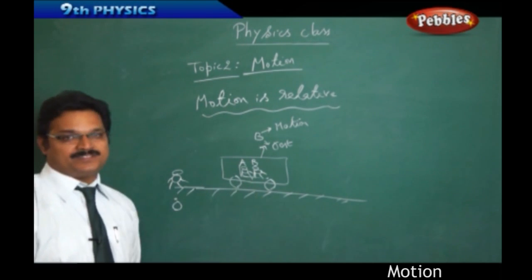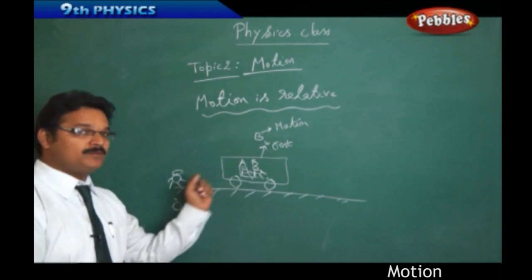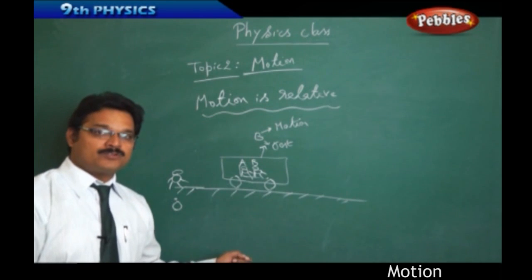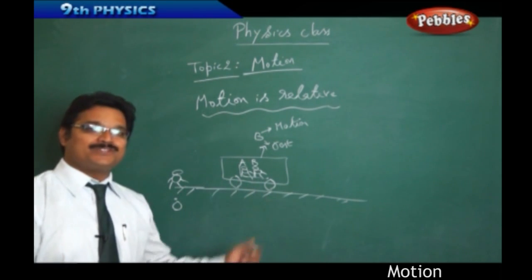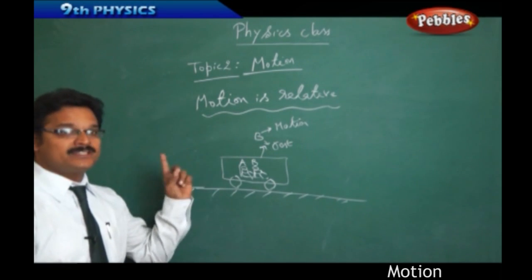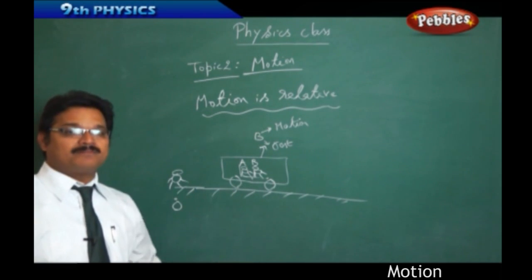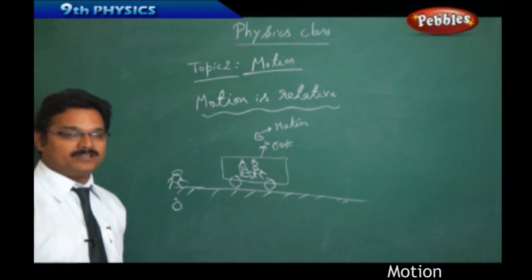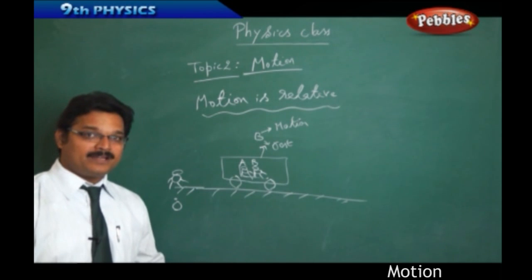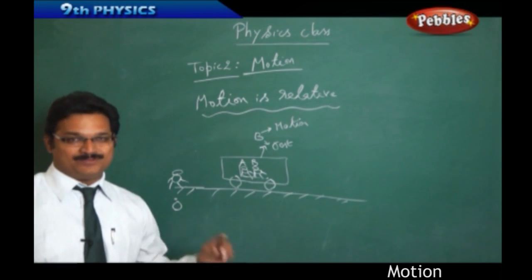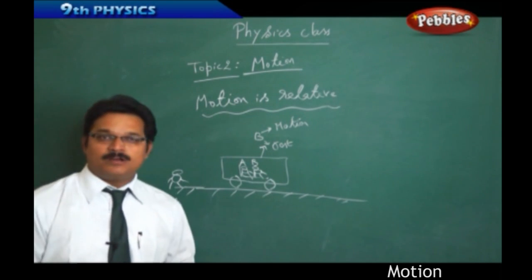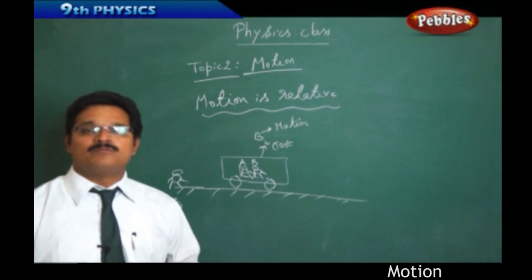Who is correct? Both are correct because motion depends upon the observer, motion depends upon the frame of reference, motion depends upon the point of reference. According to one observer, maybe the body is in motion, but according to another observer, the body is at rest. In this way, motion is relative. Relative means comparable, it's a comparison between two observers. I want to conclude that motion is relative, motion is not absolute. I hope you understand. Next we move to the fundamentals in motion topic.